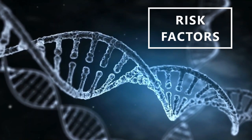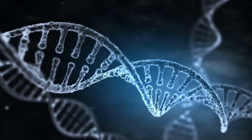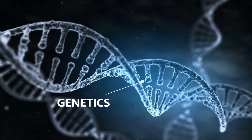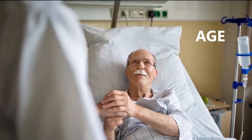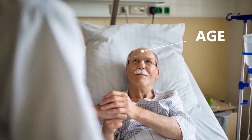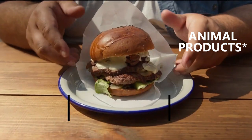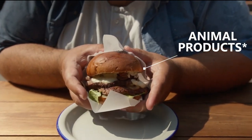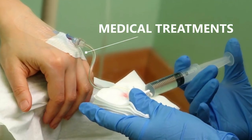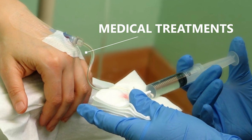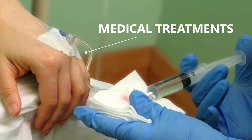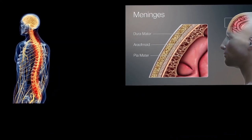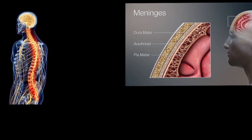Several circumstances might increase your chances of contracting prion disease. These include genetics — if someone in your family has inherited prion disease, you're more likely to have the mutation as well. Age: adults above the age of 50 are more likely to acquire sporadic prion disorders. Animal products: you can get prion illness by eating some animal products infected with prions. Medical treatments: prion infections can be passed from person to person by contaminated medical equipment and nerve tissue, including infected corneal transplants or dura mater grafts.